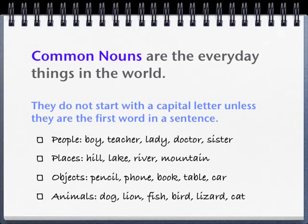For places, you'd have things like hill, lake, river, mountain. Objects: pencils, phone, book, table, car. And animals: dog, lion, fish, bird, lizard and cat.